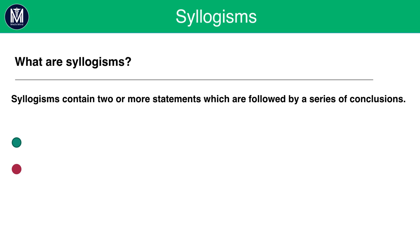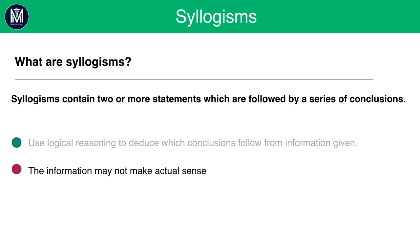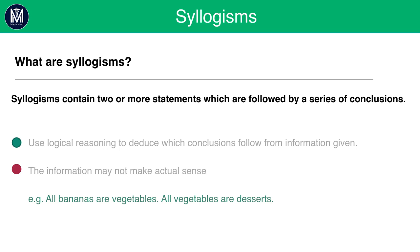So what are syllogisms? Syllogisms contain two or more statements which are followed by a series of conclusions. You need to use logical reasoning to deduce which conclusions follow from the information given. The information may not actually make real sense — for example, you may get a statement that says 'all bananas are vegetables, all vegetables are desserts.' You know this is not true, but you need to set aside all external knowledge and apply logical reasoning to answer these questions.